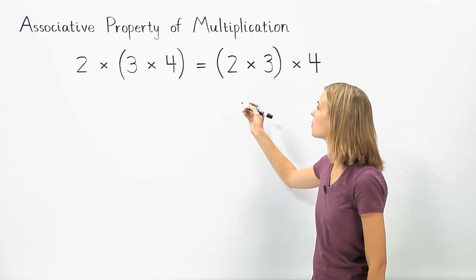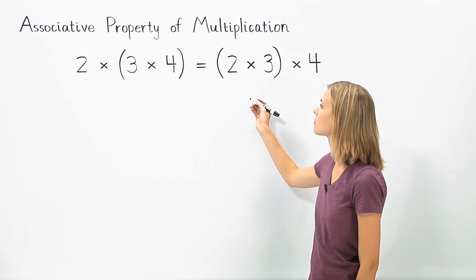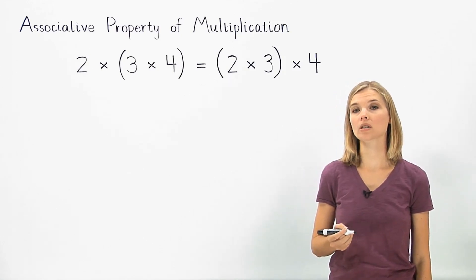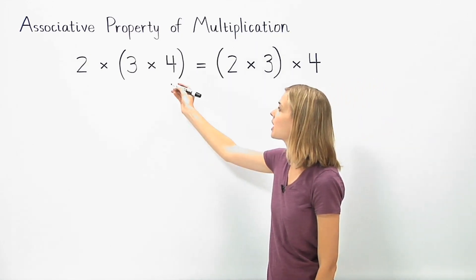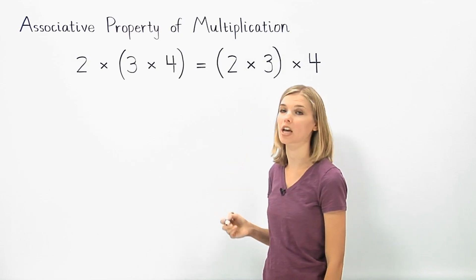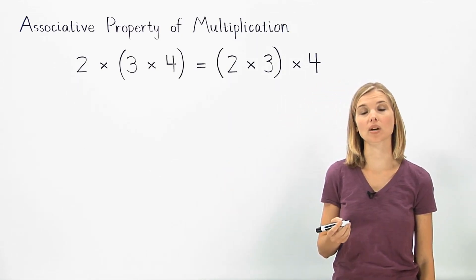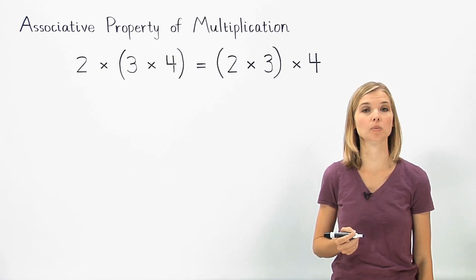and on the right we group the 2 times 3. The associative property of multiplication states that when we multiply more than two numbers, the grouping of the factors does not change the product. So let's take a look at how this problem demonstrates the associative property of multiplication.